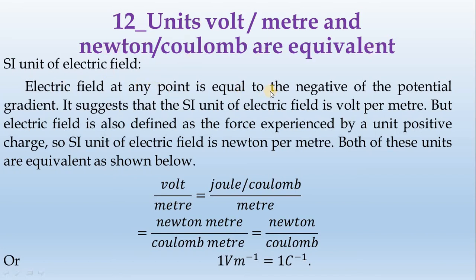Electric field at any point is equal to the negative of the potential gradient. It is suggested that the SI unit of electric field is volt per meter, but the electric field is also defined as the force experienced by a unit positive charge.